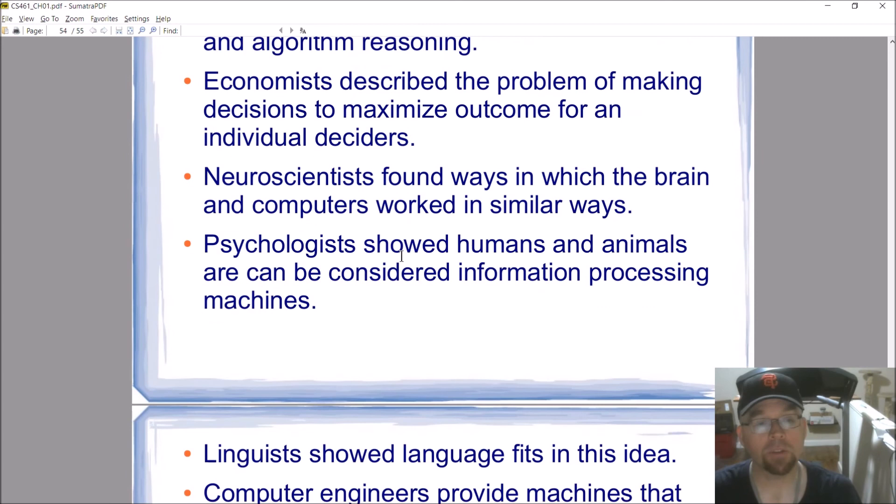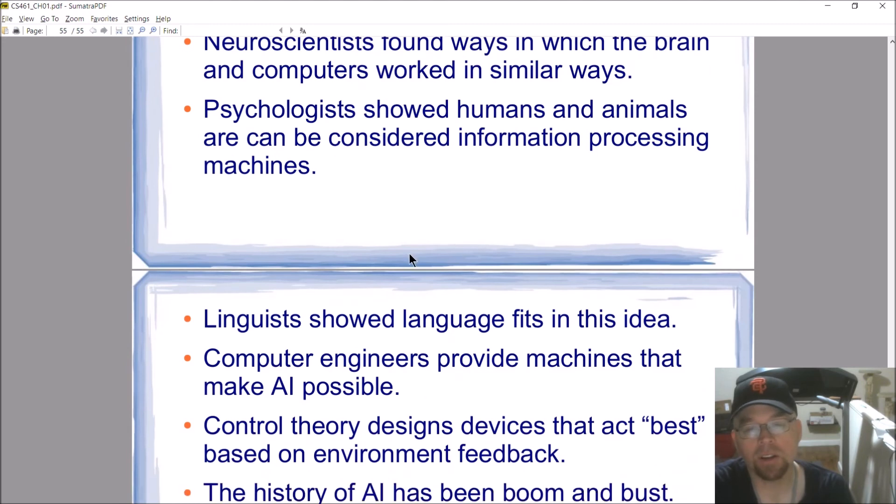Psychologists showed that humans and animals, well, humans are animals. It's kind of funny. We always say, well, humans and animals, like humans aren't animals. Of course we're animals, right? But we're anthropocentric, right? We think about ourselves because we're humans. But anyway, so humans, animals, human animals, information processing machines, right?